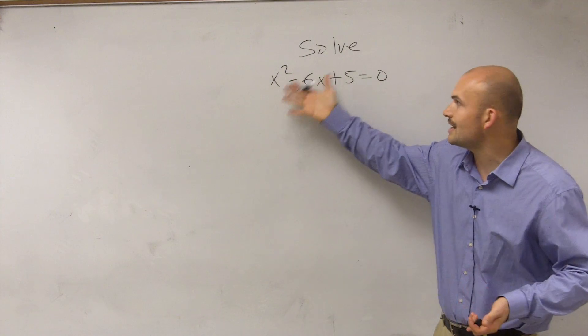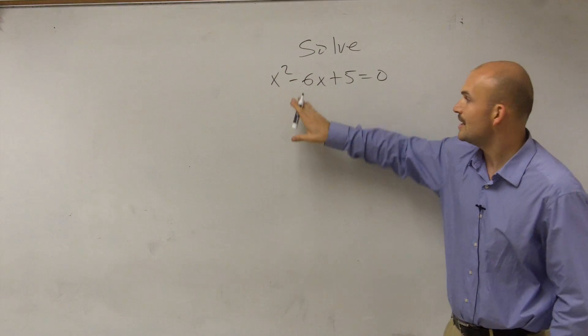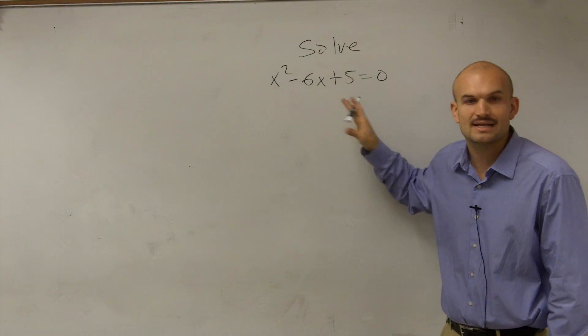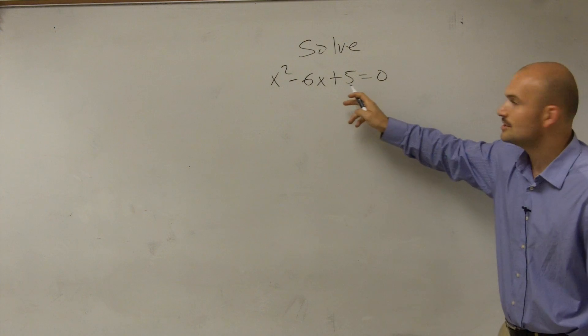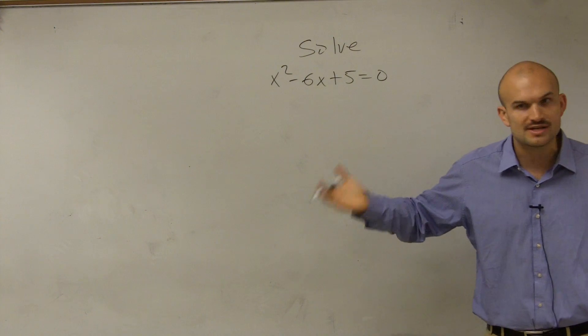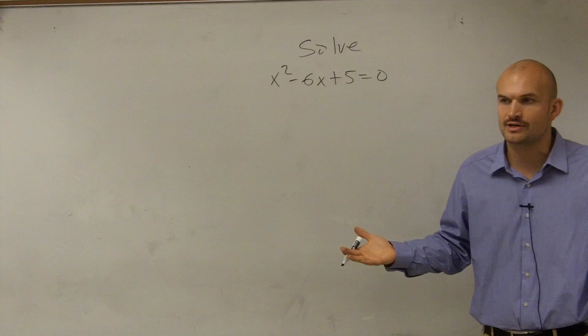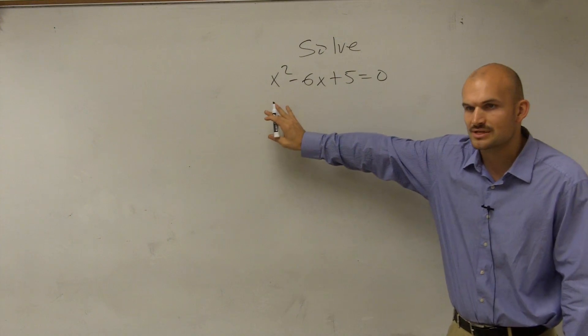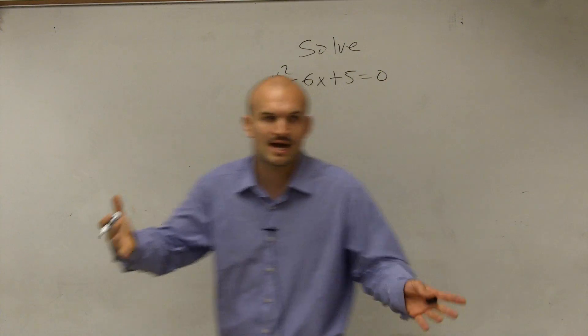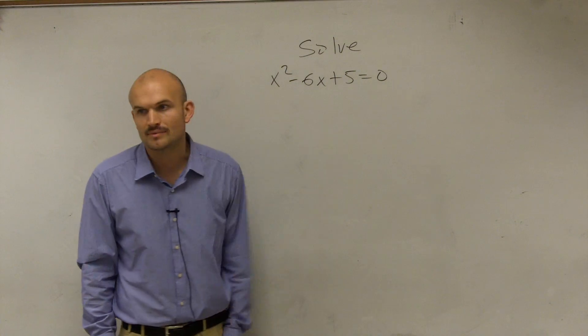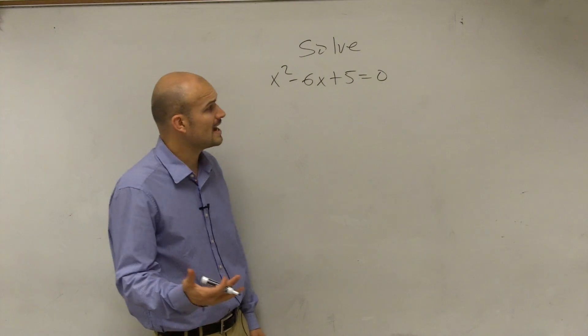So immediately I say, can I use inverse operations for this? And since I have an x squared and an x term, I can't subtract the 5 to the other side and do inverse operations like I've learned before for a linear equation because I have two variables. I can't isolate a variable when I have two of them that are not the same term or not like terms.